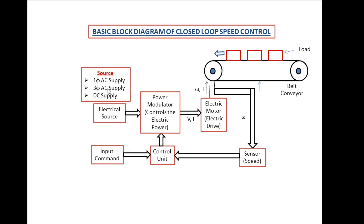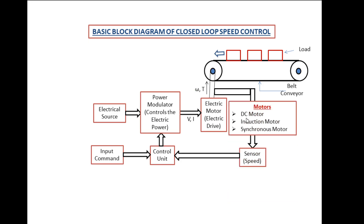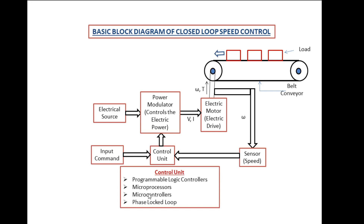The types of electrical sources are: single-phase AC supply at 230V 50Hz, three-phase AC supply at 415V 50Hz, and DC supply. Types of power modulators include: controlled rectifiers (fixed AC to variable DC), choppers (fixed DC to variable DC), AC voltage controllers (fixed AC to variable AC), inverters (DC to AC), and cycloconverters (fixed frequency to variable frequency). Types of electric motors include DC motors, induction motors, and synchronous motors, plus brushless motors and stepper motors. Control units include PLCs, microprocessors, microcontrollers, phase-locked loops, and FPGAs.